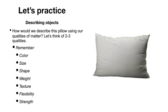So we are going to practice describing objects. I want you guys to think of qualities of this pillow. Remember our qualities — I have them listed on the screen: color, size, shape, weight, texture, flexibility, strength. I'll give you a minute. Feel free to pause the video if you need more time to think, but I will go over some qualities with you guys.